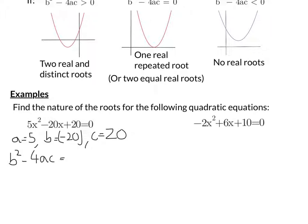So b squared, well that's going to be minus 20 in brackets squared, minus 4 times a, which is 5, times 20. Let's do that. 20 squared is 400, so negative 20 squared must also be 400. Minus 4 times 5 is 20, and 20 times 20 is 400.